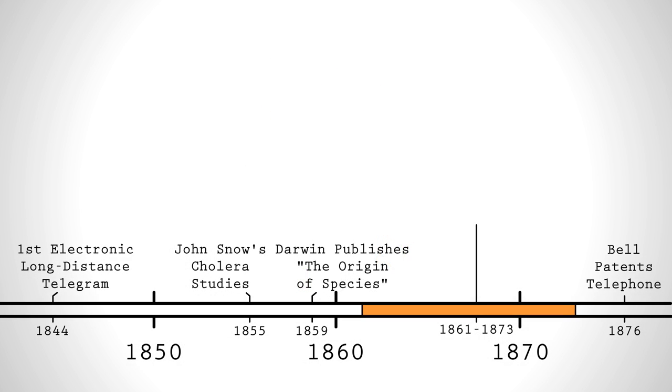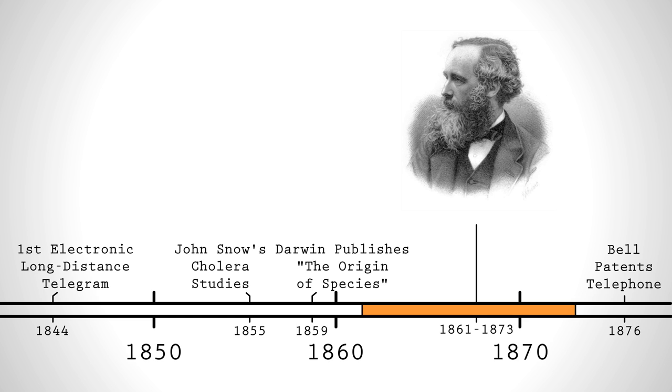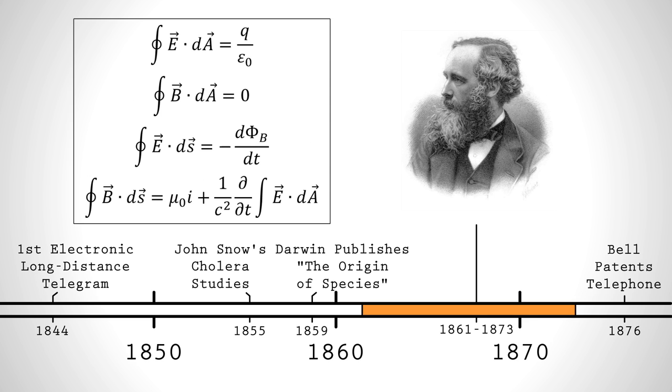In the late 1800s, Scottish physicist James Clerk Maxwell published a set of four equations which set the foundation for classical electromagnetism. Though daunting even in their simplest form, they described the reason you can hear my voice right now.